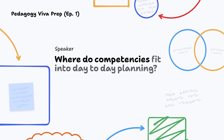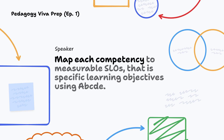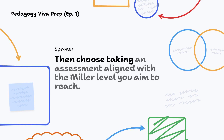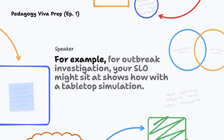Where do competencies fit into day-to-day planning? Map each competency to measurable SLOs (specific learning objectives) using ABCD, then choose an assessment aligned with the Miller level you aim to reach. For example, for outbreak investigation, your SLO might sit at 'shows how' with a tabletop simulation.